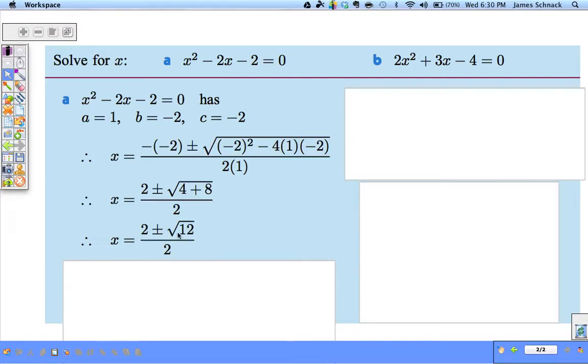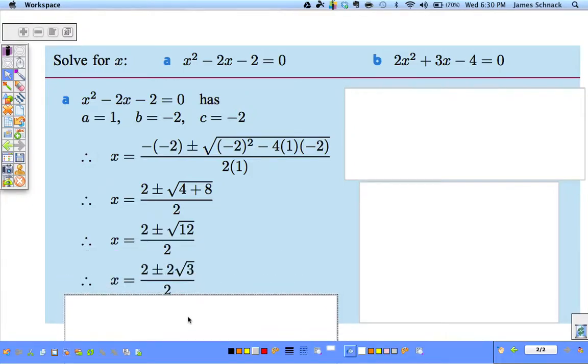But we're not done. We have to look at this radical and we have to see, can we simplify it? Are there any perfect squares that go into 12? Yeah, 4 does. 4 times 3 is 12. So we can write this answer as 2 plus or minus 2 root 3 all over 2.